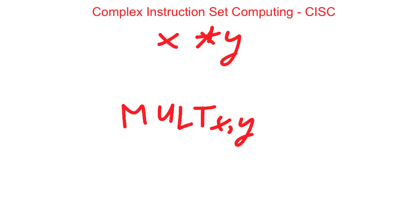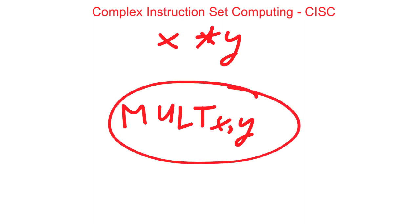When the compiler sees a multiply command in a high level language such as VB or C-sharp, it can turn this into a single machine code instruction as it's available in the instruction set. This single machine code instruction, however, will likely take multiple machine cycles to execute.